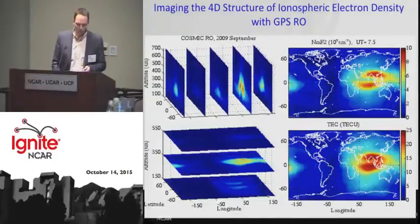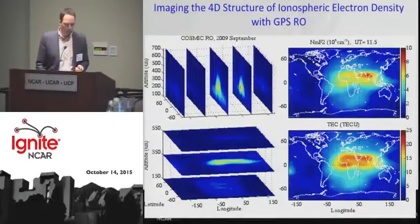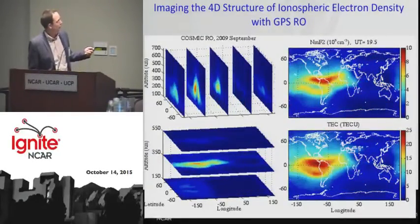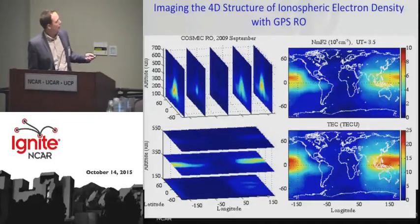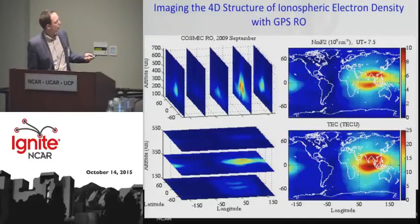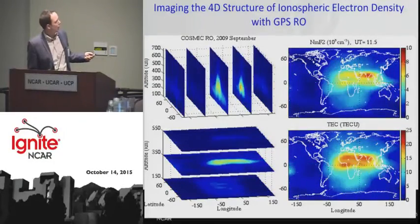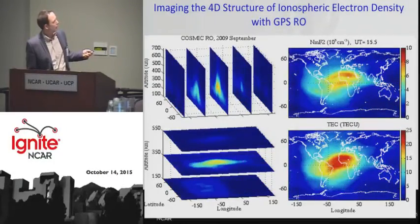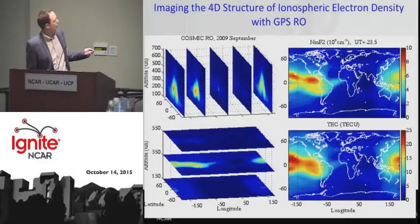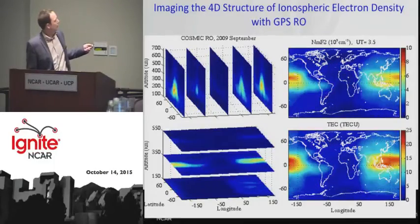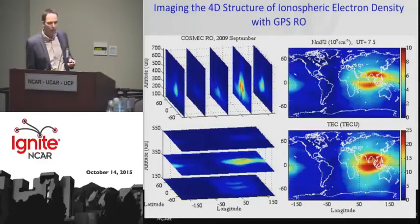Here's a movie showing the 4D structure of ionospheric electron density versus latitude and longitude. The RO data really give you some vertical information on the ionosphere.